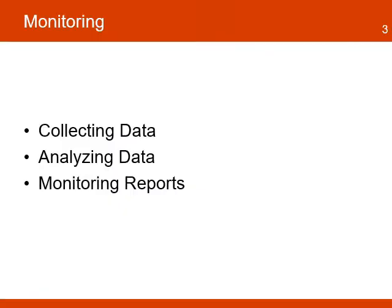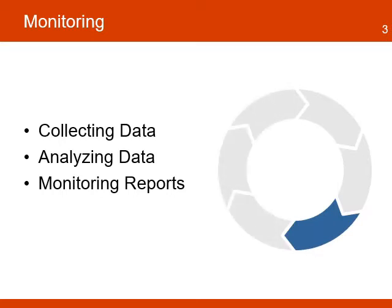The next step in the DM&E cycle corresponds to monitoring the project performance. This step includes activities to collect monitoring data, the process to analyze the data, identify variances from plan, and the process to develop the monitoring reports that the project and key stakeholders will use to make decisions about the project performance.